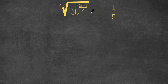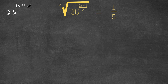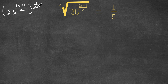I'm first going to rewrite this as 25 to the power of 2x plus 1, over 2 to the power of 1 over 2 minus x. Remember, the root is the inverse of a power. So the inverse of 2 minus x would be 1 over 2 minus x. I simply converted the root into a power.